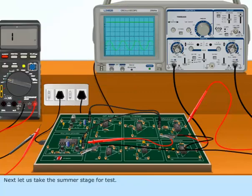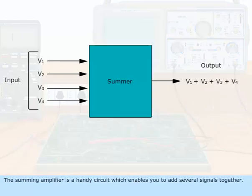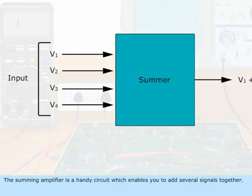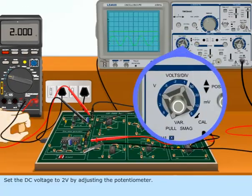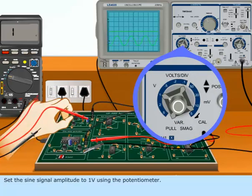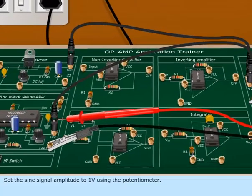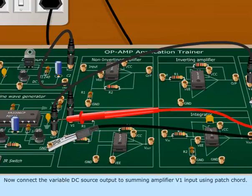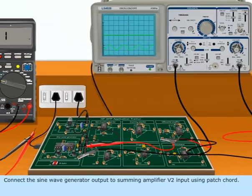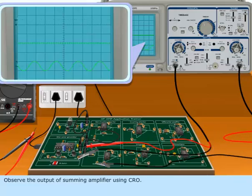Observe the output of the Differential Amplifier using CRO. Next, let us take the Summer stage for test. The Summing Amplifier is a handy circuit which enables you to add several signals together. Set the DC voltage to 2 volts by adjusting the potentiometer, and set the sine signal amplitude to 1 volt using the potentiometer. Connect the variable DC source output to Summing Amplifier V1 input, and the sine wave generator output to Summing Amplifier V2 input, using patch cords. Observe the output of the Summing Amplifier using CRO.